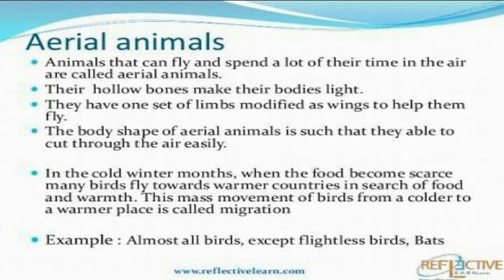Aerial animals are animals that can fly and spend a lot of their time in the air. Their hollow bones make their bodies light. They have one pair of limbs modified as wings to help them fly. The body shape of aerial animals allows them to cut through the air easily. In cold winter months when food becomes scarce, many birds fly towards warmer countries in search of food and warmth. This mass movement of birds from a colder to a warmer place is called migration. Examples are almost all birds except flightless birds, and bats.